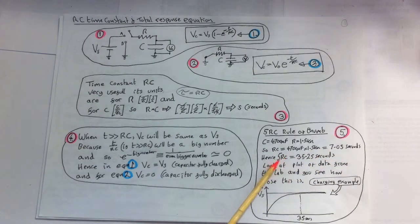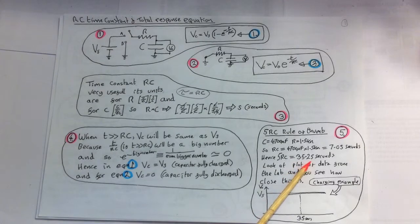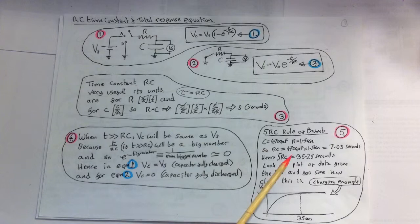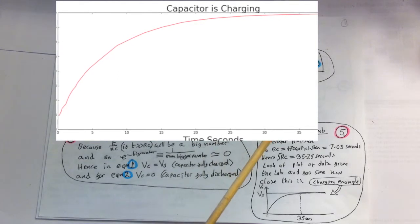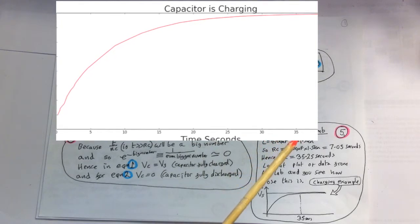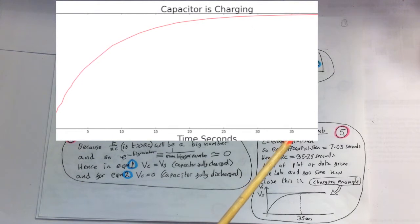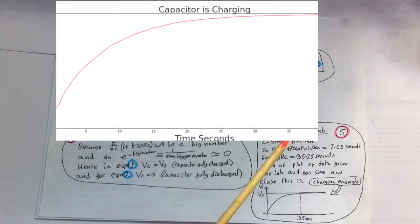So R times C there would give 7.05 seconds. So 5 times this then obviously gives 35.25 seconds. Now if you watch the lab and time it, you'll see the timings are well within this 1%. To prove it, here is my printout of the curve, and you can see here 35 seconds, so this rule of thumb is very accurate.